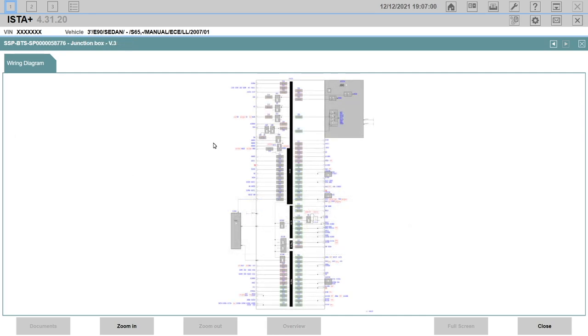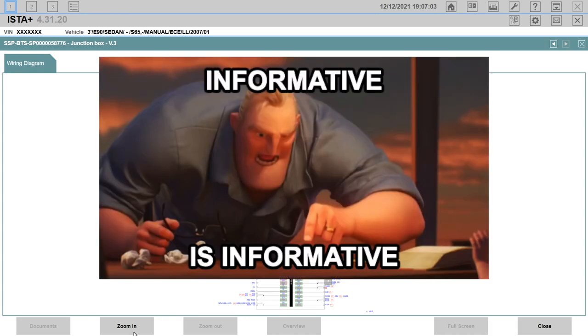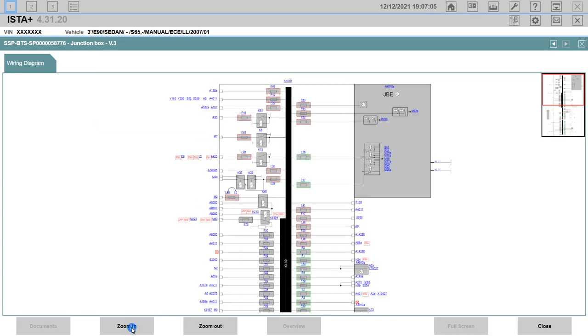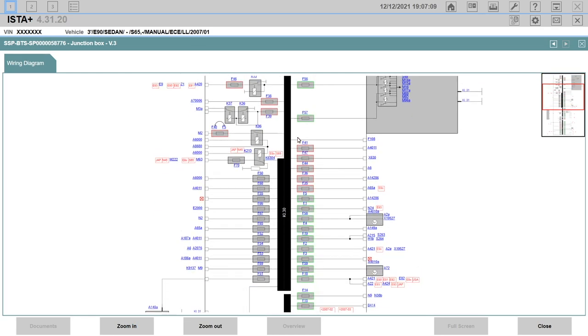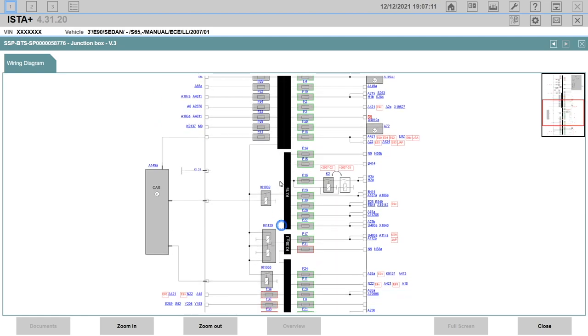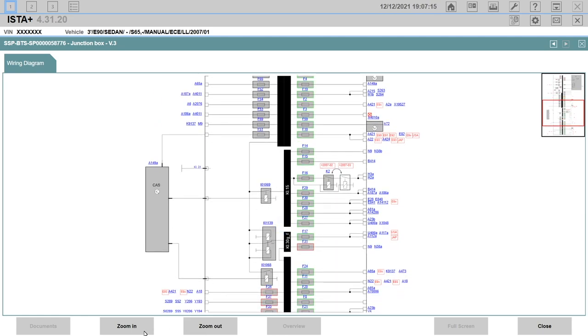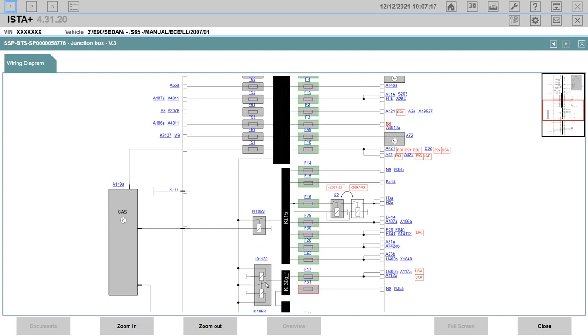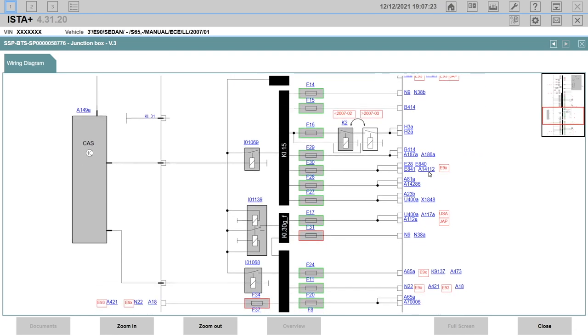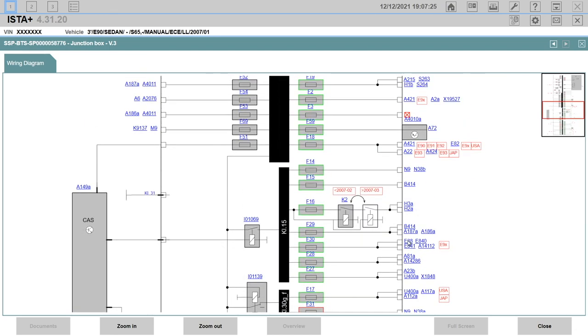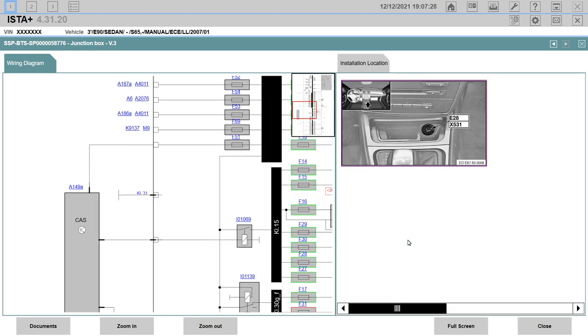The other wiring diagram of the junction box is more informative. With this one, we can clearly see the terminals, the corresponding relays, and fuses. For example, the front cigarette lighter is numbered E28, which is here, E28. It is connected to the terminal 15 via relay KI15, and the responsible fuse is F30.